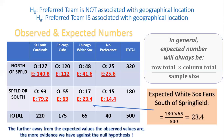We've done that for each remaining cell in the table. The further away the expected values are from the observed values, the more evidence against the null hypothesis. If the null hypothesis is true, observed numbers should match expected numbers. The degree to which observed values differ from expected values gives evidence against the null and supports the alternative that there is an association between the two variables.